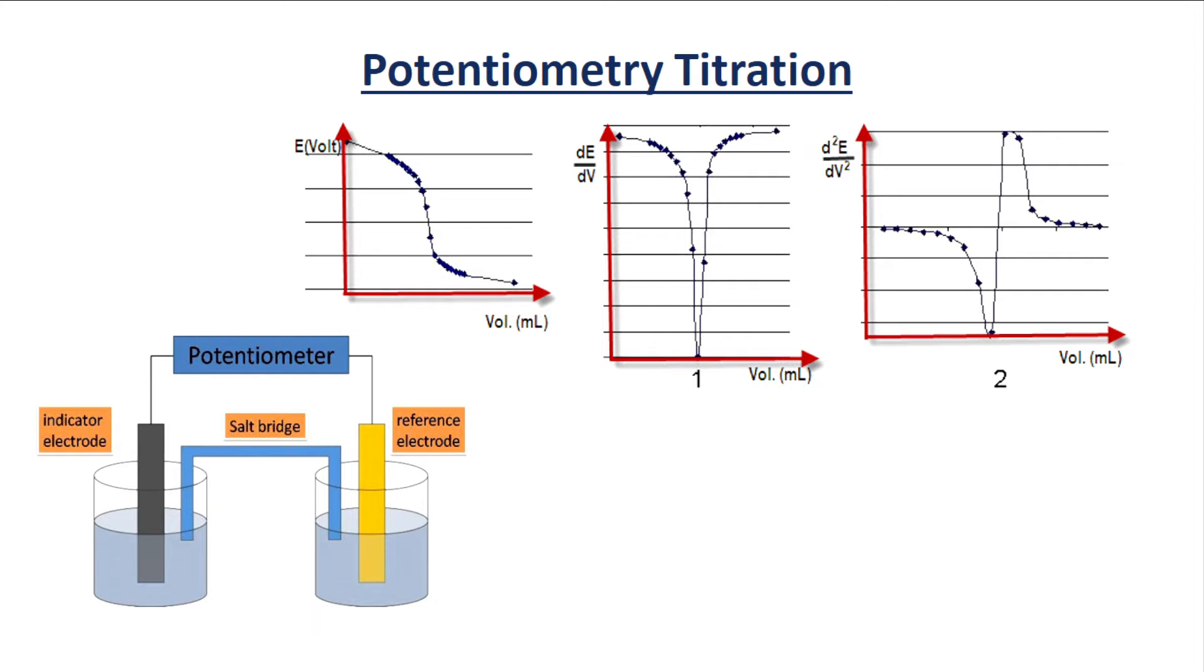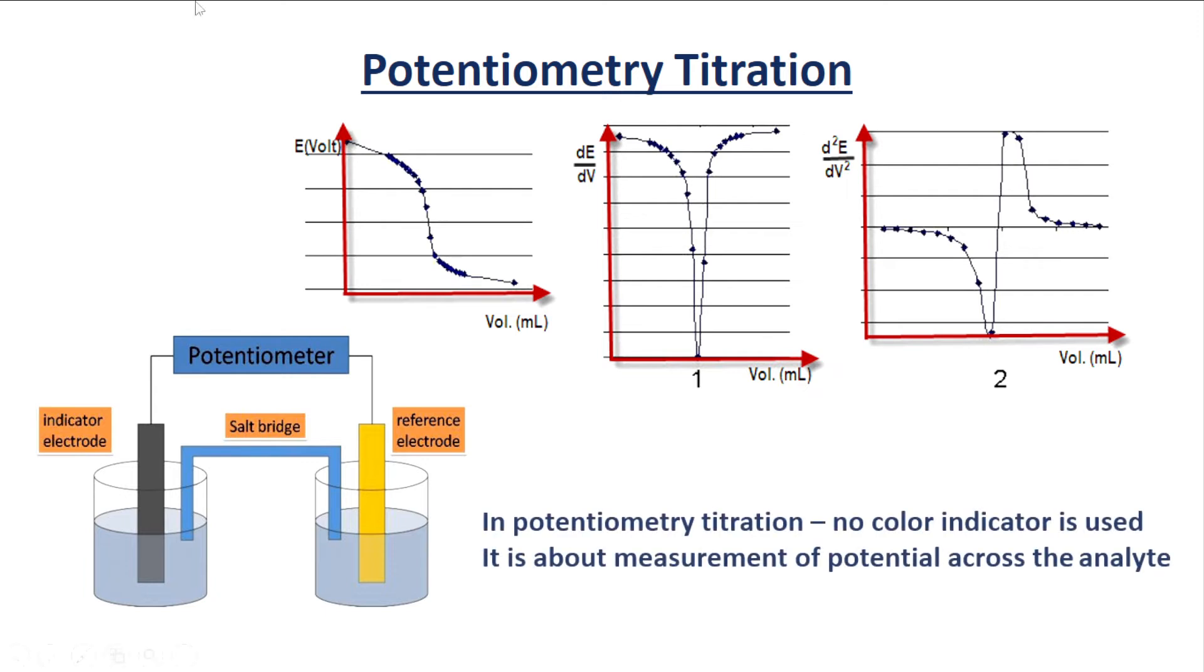The overall electrical potential is calculated as potential of the cell equals potential of the indicator minus potential of the reference plus potential of the solution. As the volume of the titrant is increased, there is a decrease in potential.